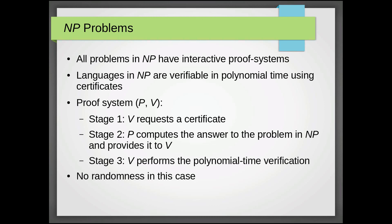Then, in stage two, P uses unbounded computation time and resources to compute the answer to the problem and provide the certificate back to V. Finally, in stage three, V just performs the polynomial time verification we know must exist because the problem is in NP.